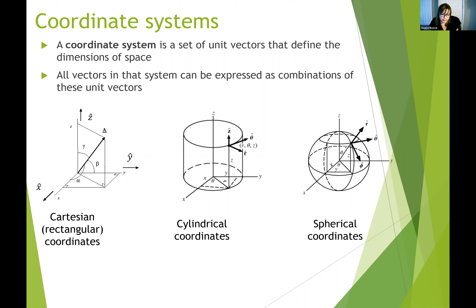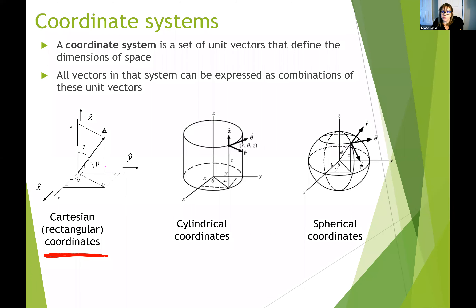Here are some examples of three-dimensional coordinate systems. The one we're going to use the most is called the Cartesian, also known as the rectangular coordinate system. There is also a cylindrical coordinate system and a spherical coordinate system that are commonly used in physics, especially in Physics 2 when talking about electric fields or magnetism. We are going to stick to the Cartesian coordinate system.